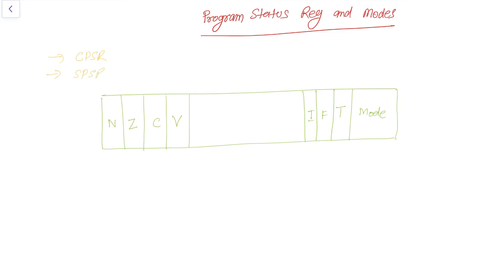The other one is the SPSR. When the processor is running it saves and updates the status of registers into the CPSR register set, and when it jumps or changes from one mode to another mode it saves the current program status register into the SPSR. As you might have noticed, there are flag bits and reserved bits. The SPSR and CPSR are 32-bit register sets.